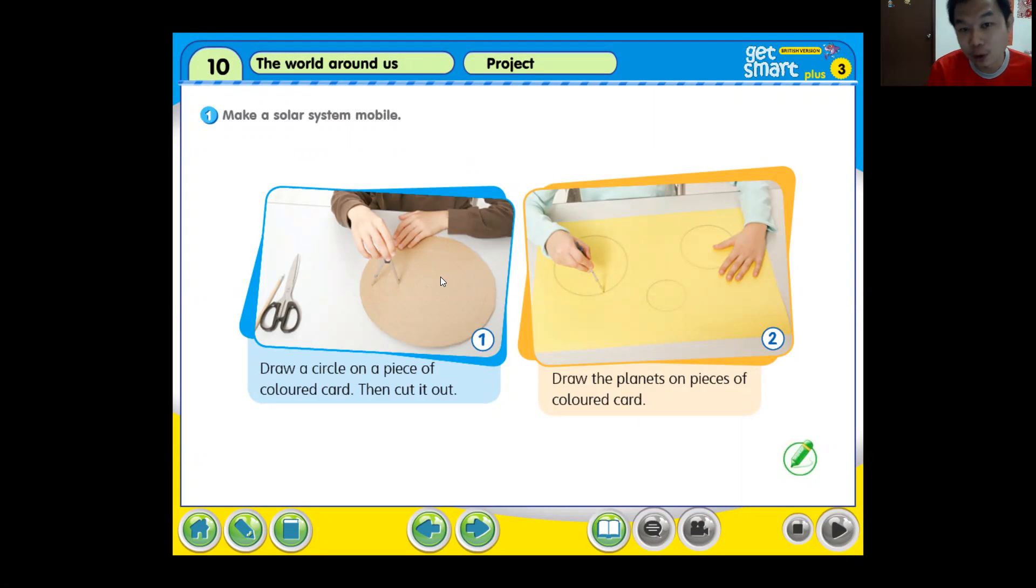So boys and girls, why don't you try to make your own solar system? You basically learn that we have eight planets in our solar system, of course include with our star.